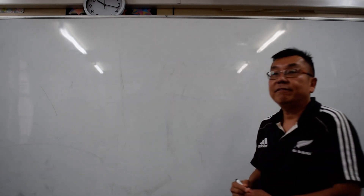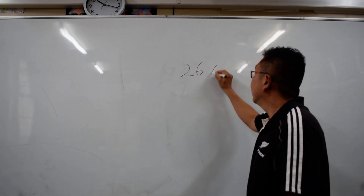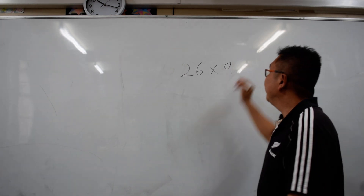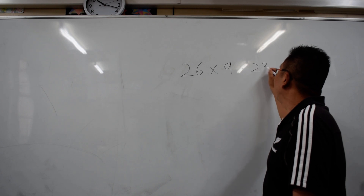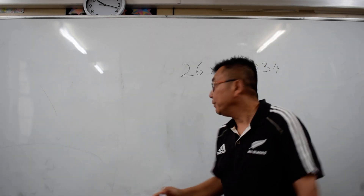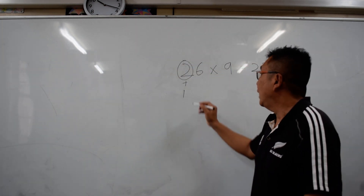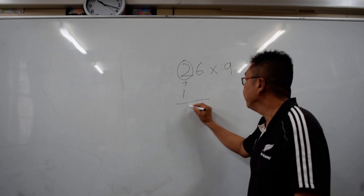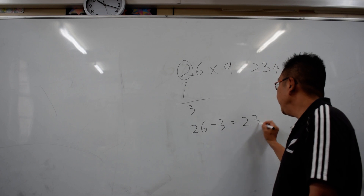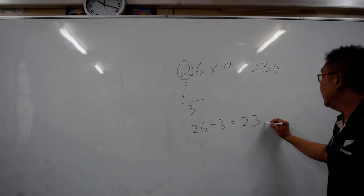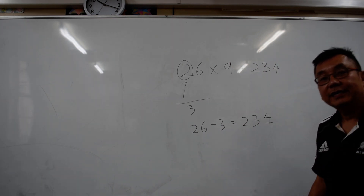The next one is a 2-digit multiplication of 9. For example, 26 times 9. The answer is 234. How do I get that? It's very simple. Take this digit 2 and add 1 to get 3. So 26 minus 3 is going to be 23. And the last digit must make the 3 digits add up to 9, and that number has to be 4.